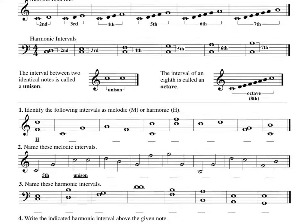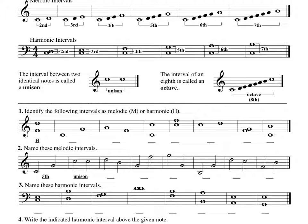Down below, you need to identify the following intervals as melodic or harmonic. So very simple to do. In our first example, this is going to be harmonic because the notes are right on top of each other. If the notes are not on top of each other and they go from left to right as this does, then we're going to call it melodic.